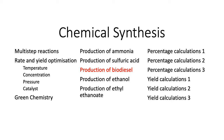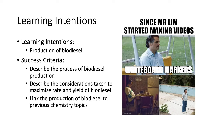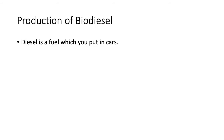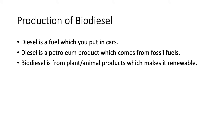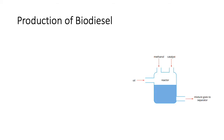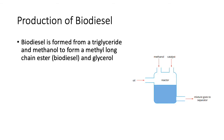Hi, this is Mr. Loom here again, and this is our video on the production of biodiesels. We're going to link them to previous chemistry topics. Diesel is the fuel you put in cars — a petroleum product from fossil fuels. Biodiesel is a plant or animal product, which makes it renewable. So biodiesel is a fuel you can put in your car, but it's renewable because it comes from plant and animal products.